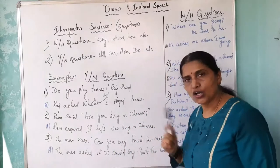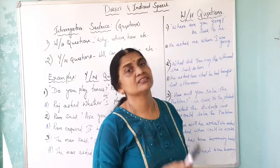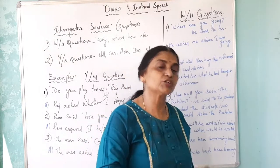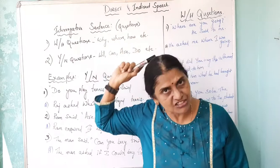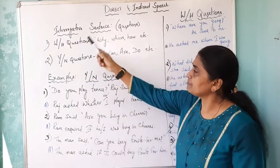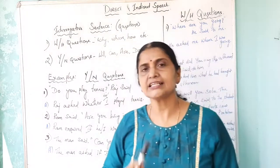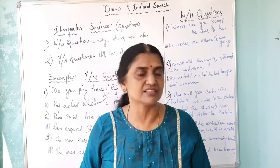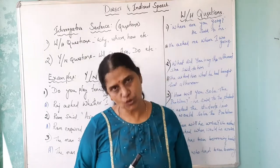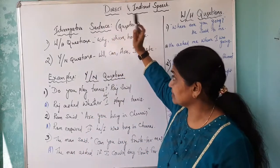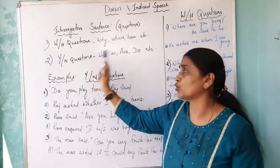Now, we have already seen assertive, imperative, and exclamatory sentences — changing them from direct to indirect speech. In today's class, we will deal with interrogative sentences. When we take the interrogative sentence, it denotes questions. In the interrogative sentence, you have two types: one is WH questions, and the other one is Yes/No questions.